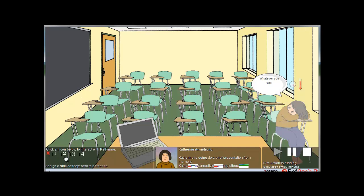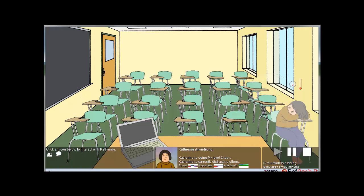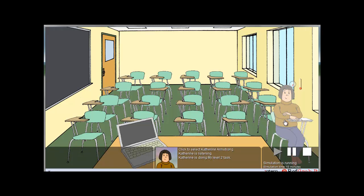I'm going to go ahead and try my Level 2 task. It is here on the far right — you can see it's called my Level 2 task. We can see that her temperature meter has dropped back down. She's just started this new task. We can also see at the bottom of the screen that she is doing her Level 2 task and she's no longer distracting others.